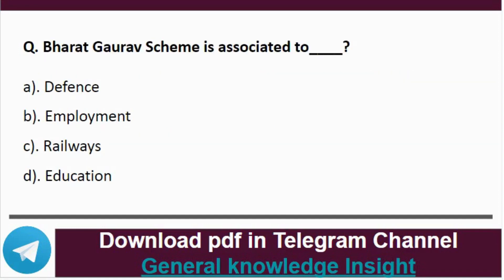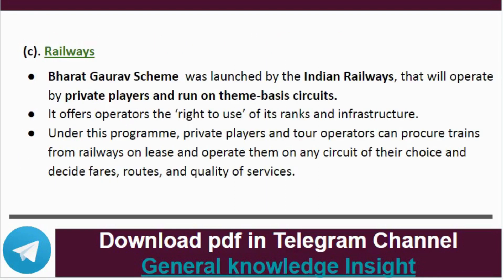Question 8: PARAG scheme is associated with which sector? The correct answer is option C, that is Railways. The PARAG scheme was launched by Indian Railways, which will operate via private players and run on time-based circuits. It offers operators the right to use its tracks and infrastructure. Under this program, private players and tour operators can procure trains from railways on lease and operate them on any circuit of their choice, deciding fares, routes and quality of services.